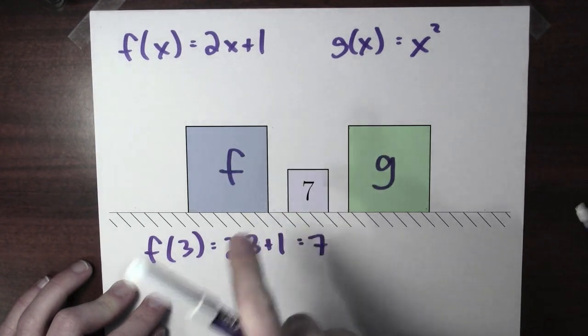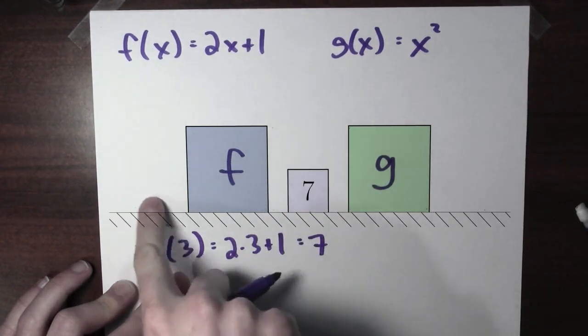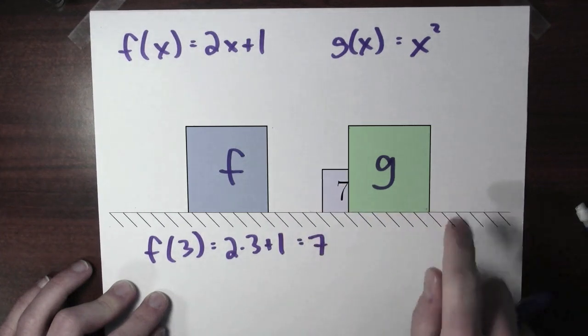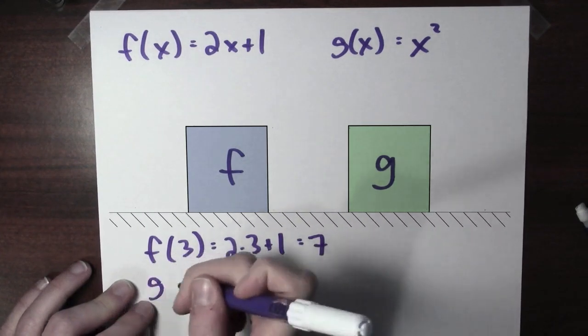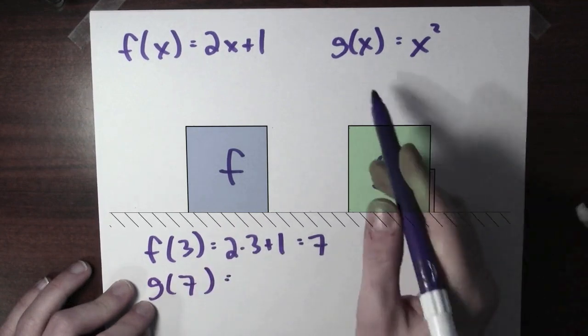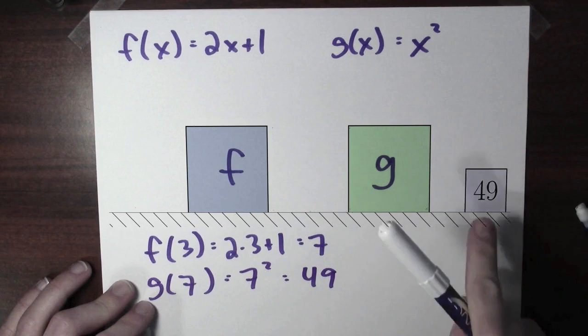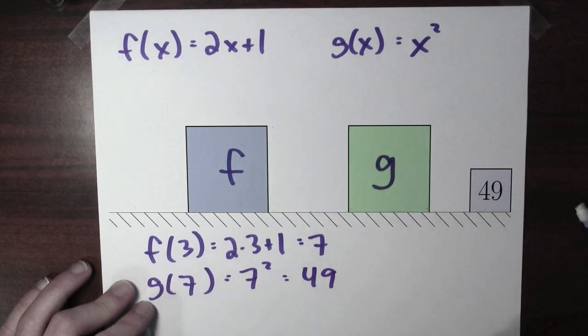So now we've got a 7 right there. So the 3 went into the function and came out as a 7. Now I'm going to take the output of f and put it into the input of g. So g of 7, well, that's going to be 7 squared. And that will be 49. So here now, coming out of the function g, is the number 49.